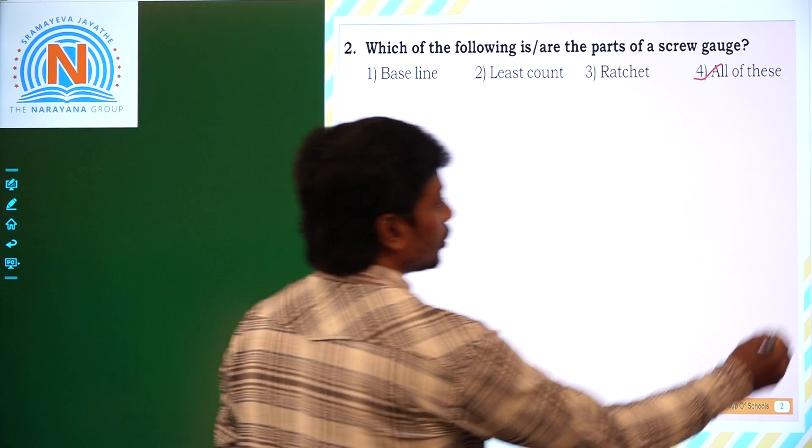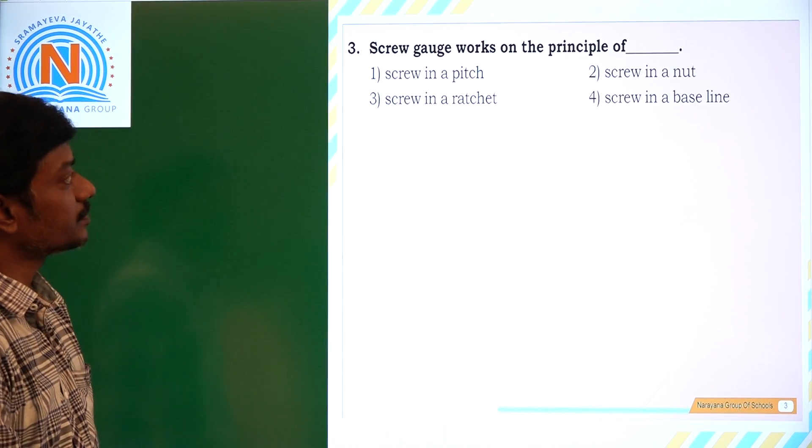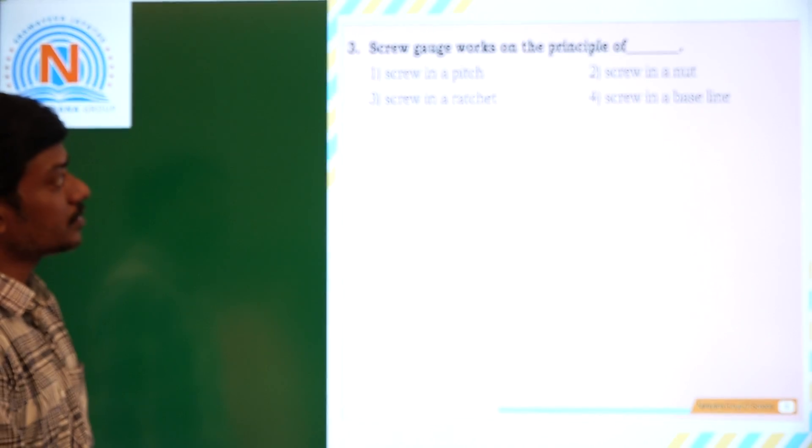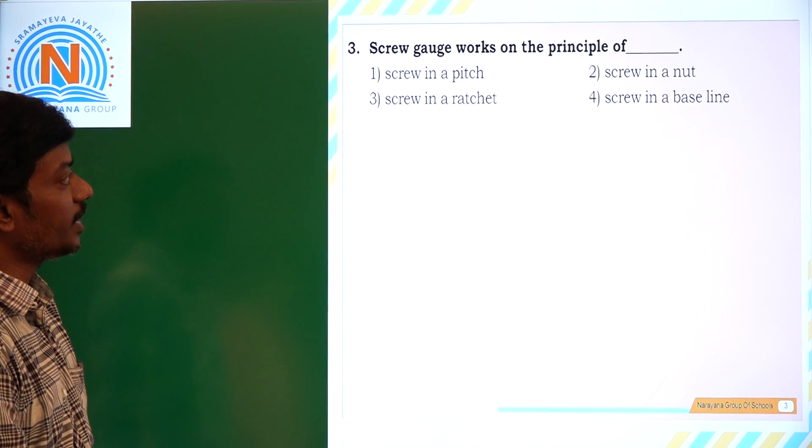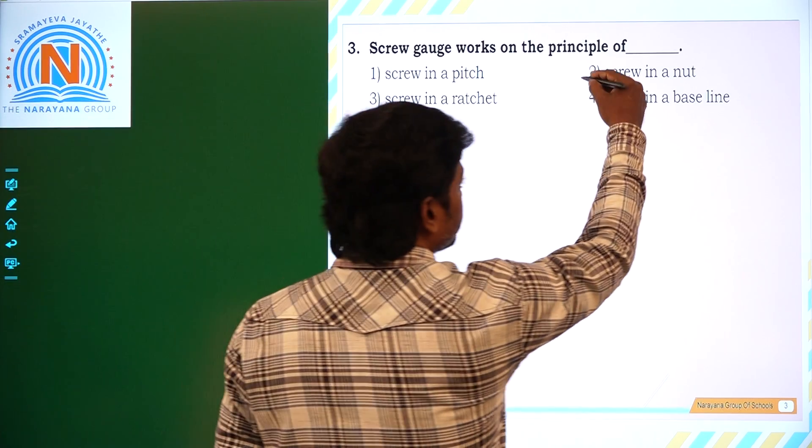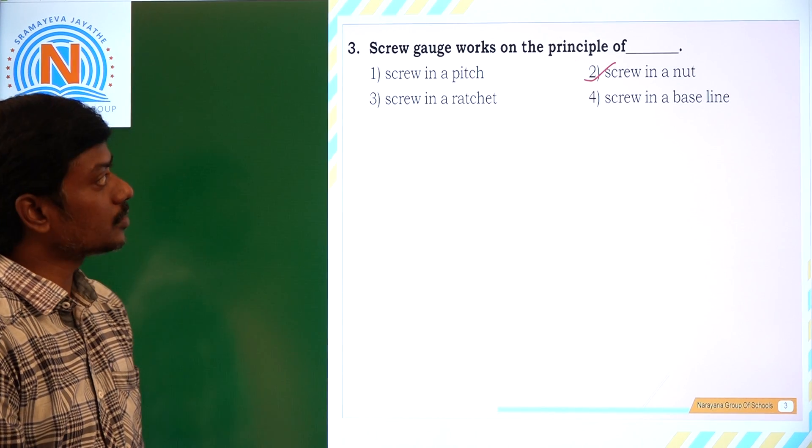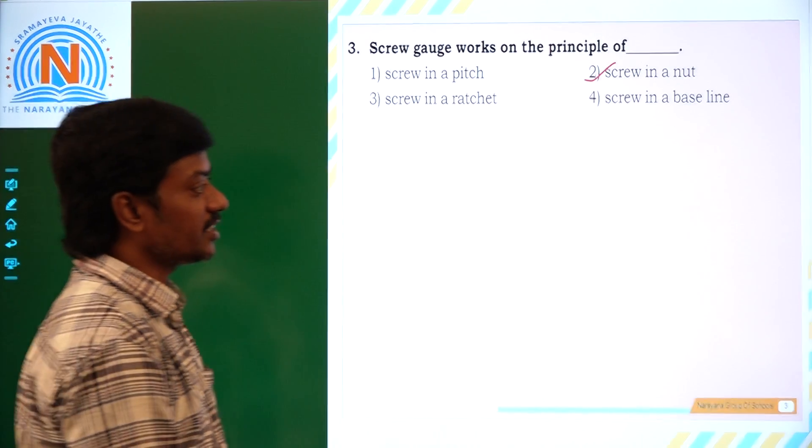Next question, third one. Screw gauge works on the principle of - screw in a pitch, screw in a nut, screw in a ratchet, screw in a baseline. Screw gauge works on the principle of screw in a nut. So second option is correct. Let's see the next question.